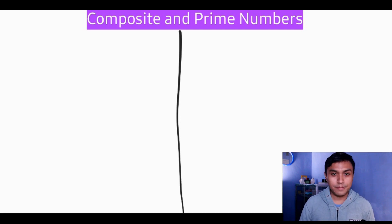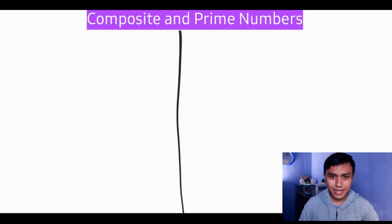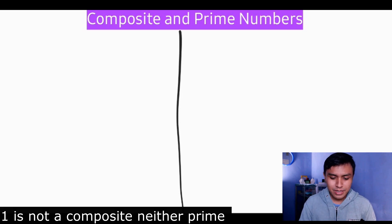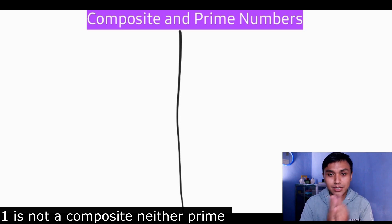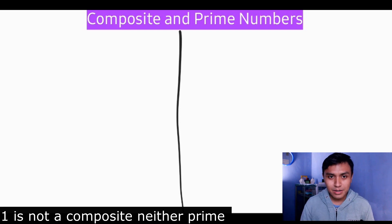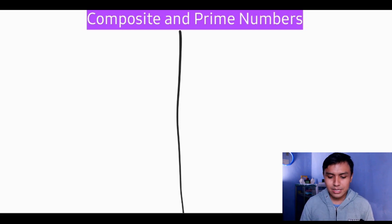Let's start from one. One is a special number because it is neither composite nor prime. So we'll move to the next number, which is two.